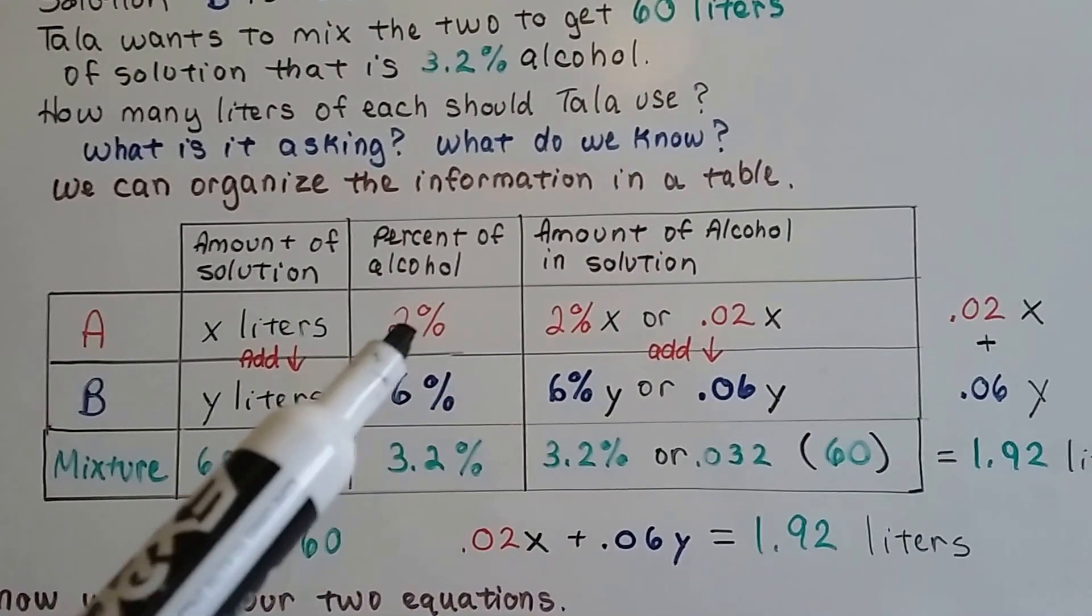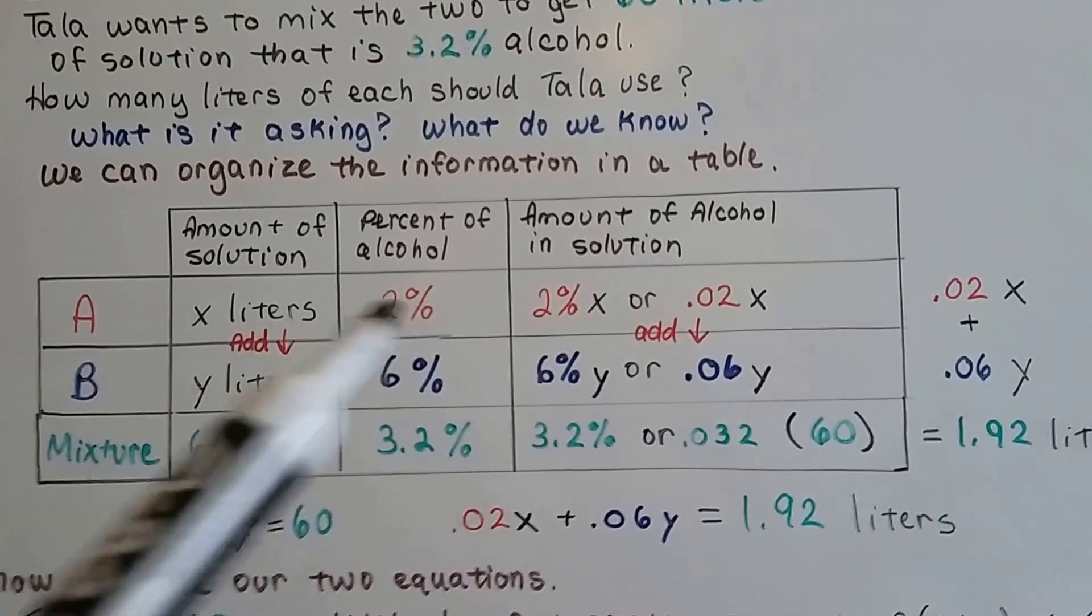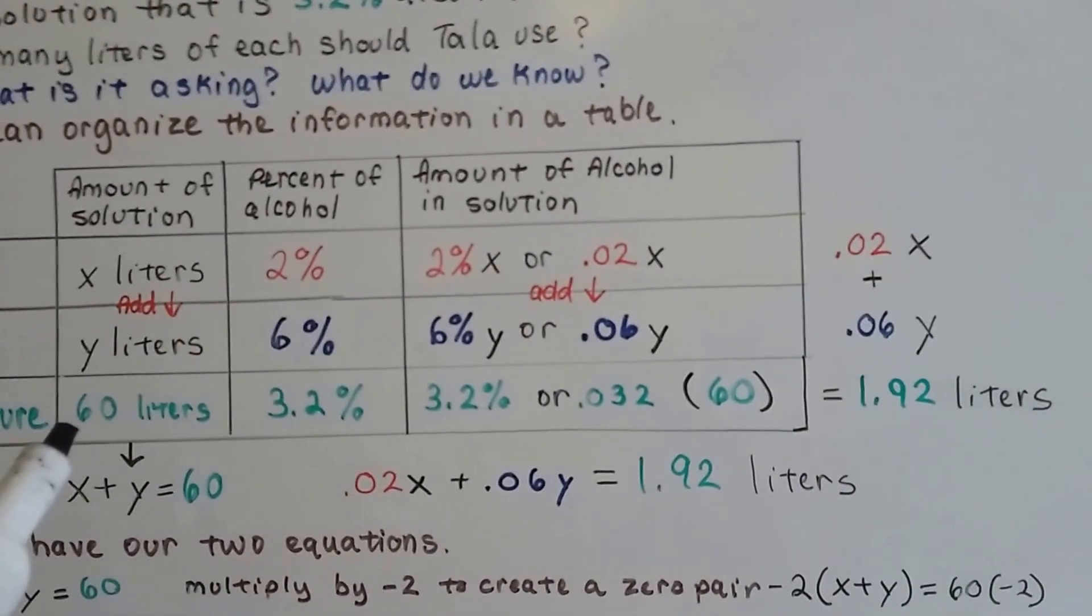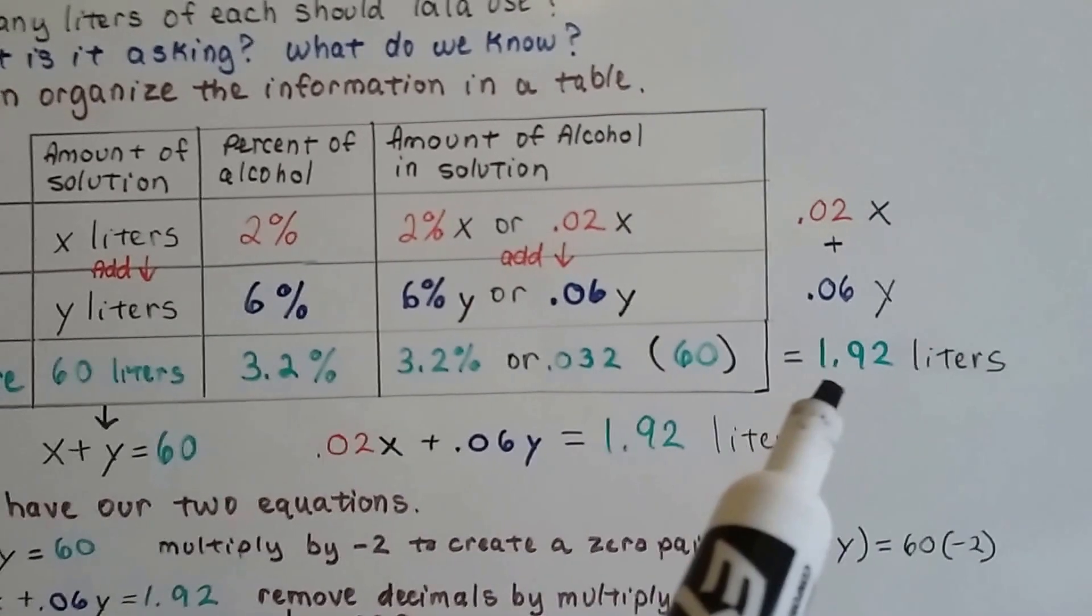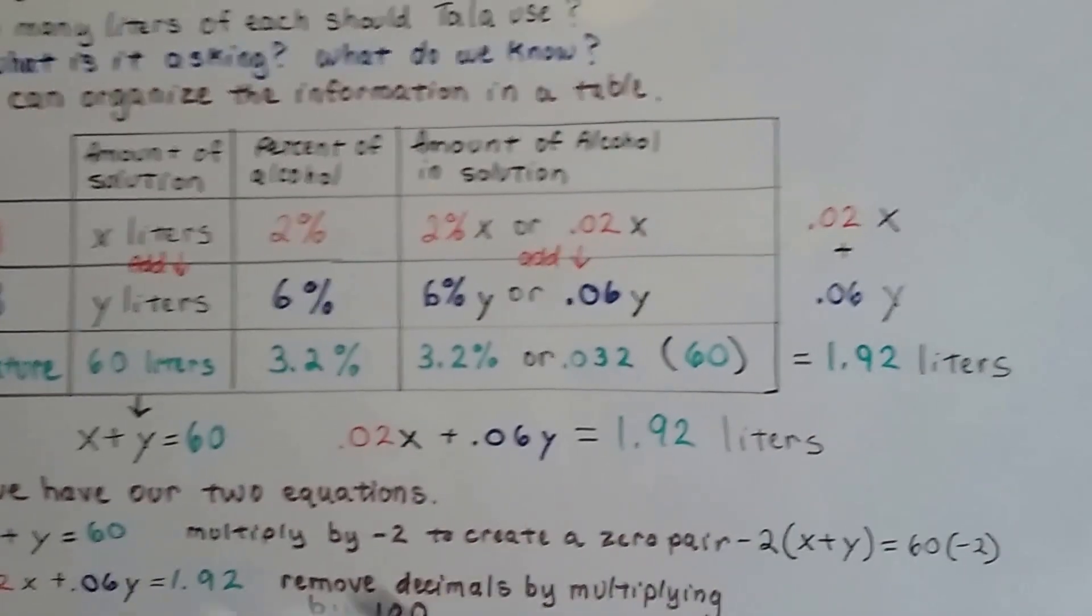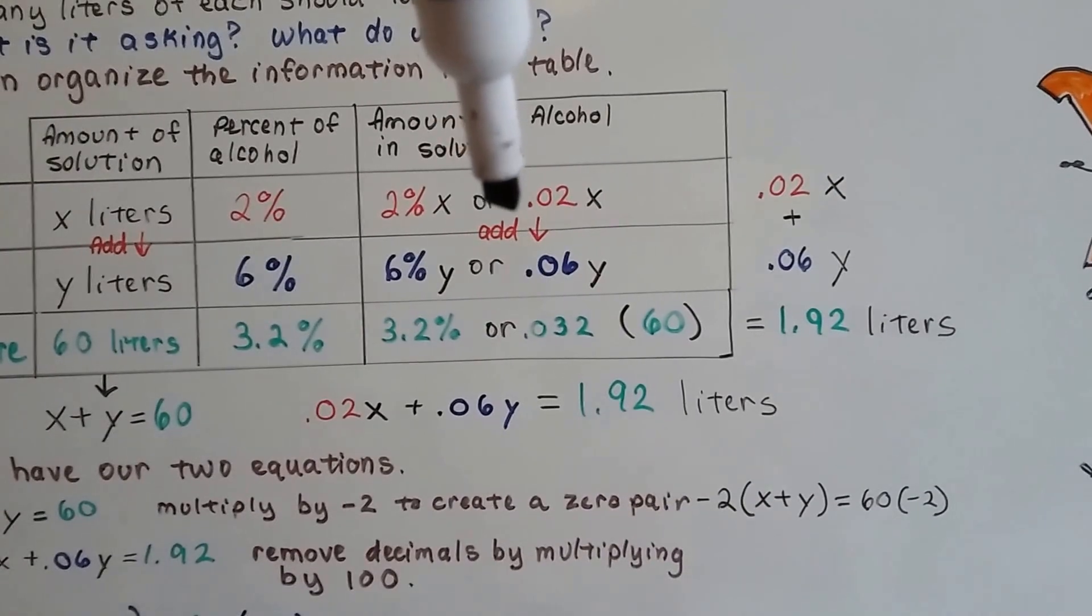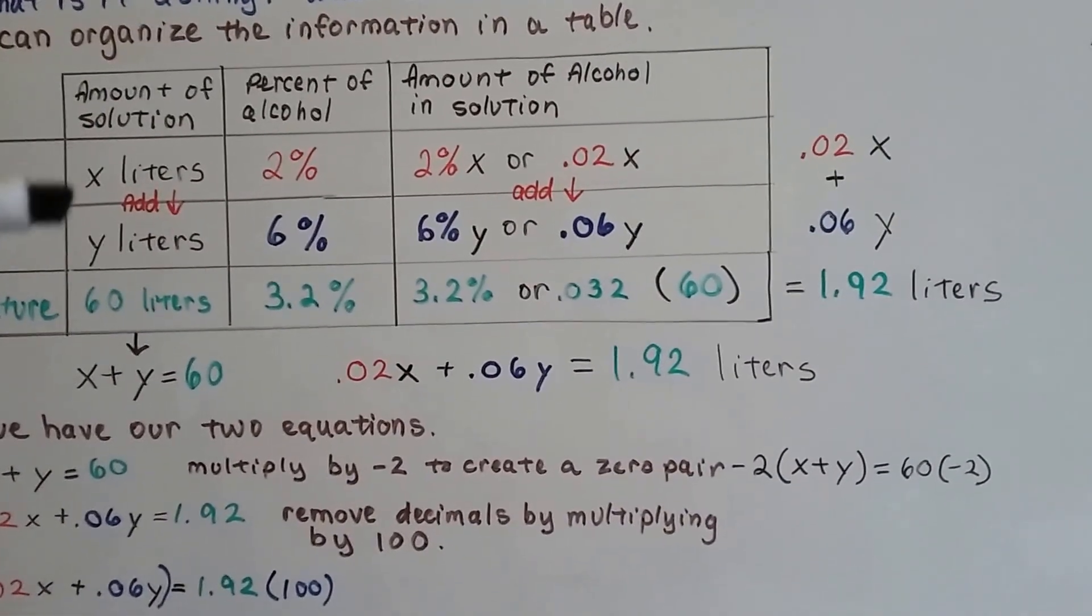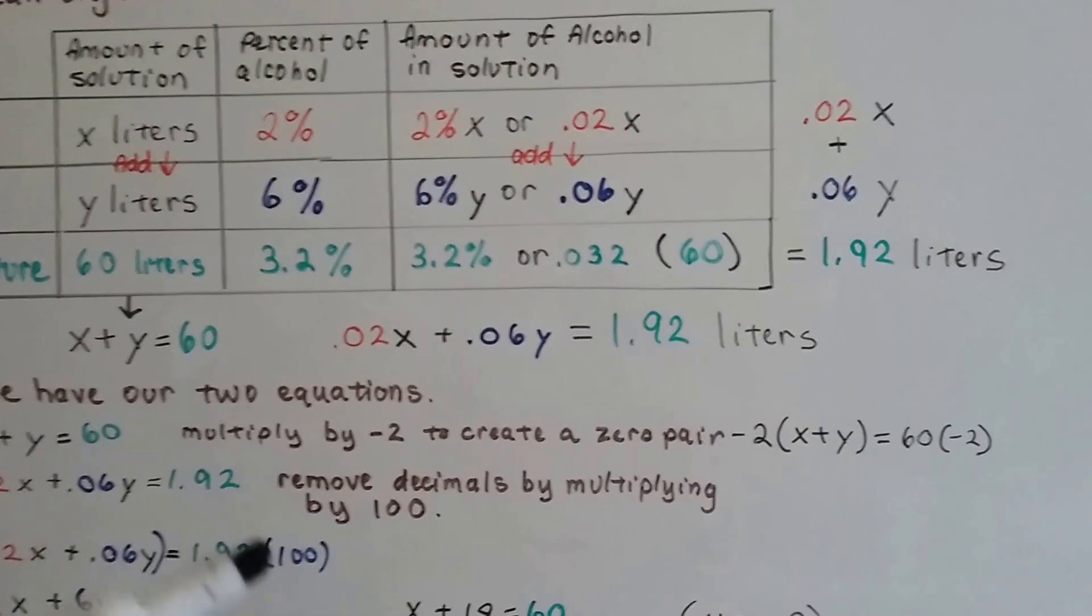We know that this 2% can be written as .02 as a decimal. We need to get that percentage sign off. So, we have .02X. We are going to multiply these together. And, we are going to multiply these together to get .06Y. Now, that it is in this nice table, we can multiply this 3.2%, which is really .032 as a decimal, times the 60 liters. And, we know that it will come out as 1.92 liters. And, this is .02X and this is .06Y. We add them together. We add these two together. That is going to create one equation. X plus Y equals 60. And, this is going to create .02X plus .06Y equals 1.92. See? Now, we have two equations.